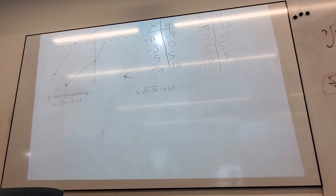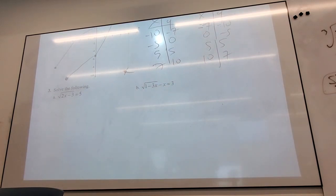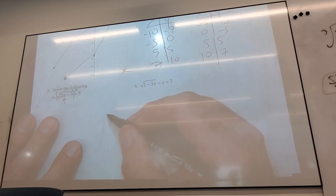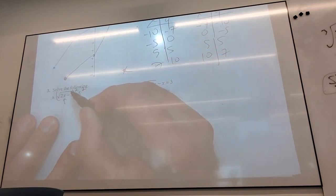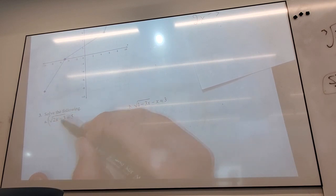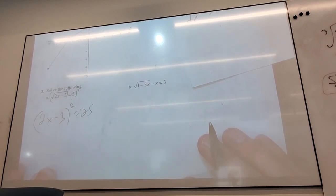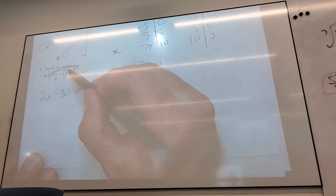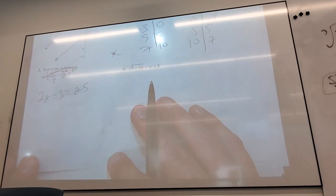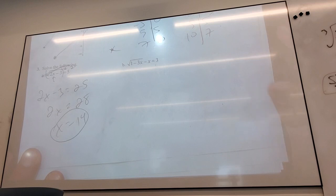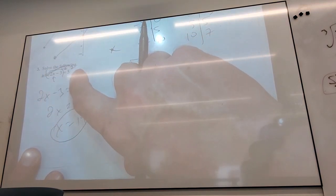Problem 3A should be straightforward. I want to kill that square root because that's where my x is stuck, so I square both sides. I get 2x minus 3 equals 25. The square root dies immediately — it's not there anymore. Then it's just a couple of steps: add 3, divide by 2. Radical equals positive number should have an answer.